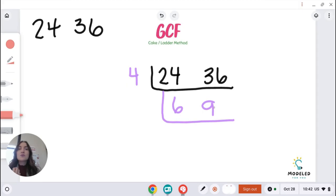What number goes into both of those? Well, I know that the number 3 goes into both 6 and 9. How many times does 3 go into 6? Two times. And how many times does 3 go into 9? Three times.